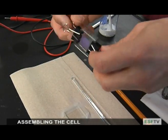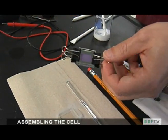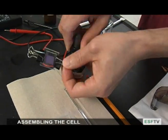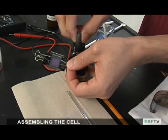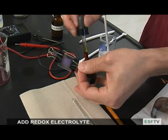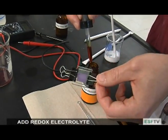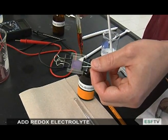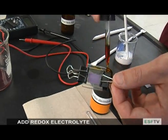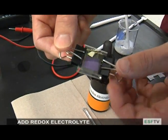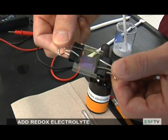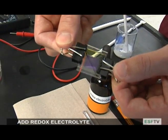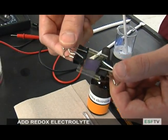At this stage, the cell is ready to go, except that there's no conductivity. We're going to add the conductivity using a redox electrolyte made of iodine and potassium iodide. Just put two or three drops at the top and squeeze the binder clips in and out a few times until the dye and redox electrolyte are mixed together. At this stage, we have a working solar cell.